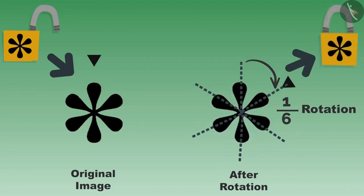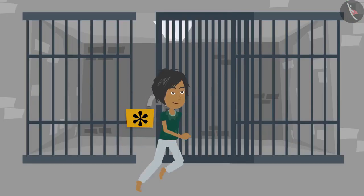Because of the one-sixth rotational symmetry in this lock, there would be no difference in its shape even after one-sixth rotation. Due to this, the prisoners got another chance to run away since the lock remained open.